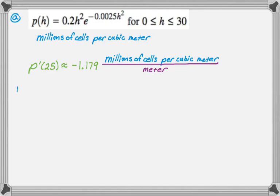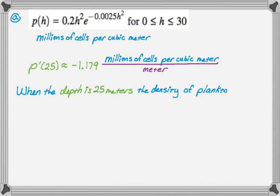So when the depth is 25 meters, the function we're dealing with here is the density of plankton. Since I got a negative, I'm going to say the density is decreasing. And then I'm just going to say what it's decreasing by. It's decreasing by 1.179 millions of cells per cubic meter, per meter. And that's how I'm going to write my answer.